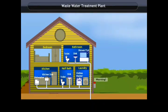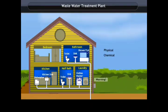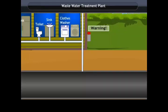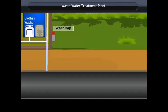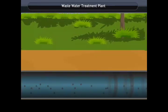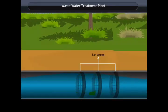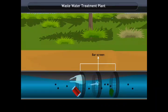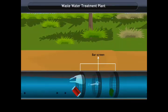Waste Water Treatment Plants. In wastewater treatment plants, the wastewater is treated through physical, chemical and biological processes to remove physical, chemical and biological contaminants. Bar Screen: The purpose of this section of the water treatment plant is to remove large-sized objects from the wastewater, such as rags, sticks, cans, plastic packets, napkins and papers, by allowing the sewage to pass through a bar screen.